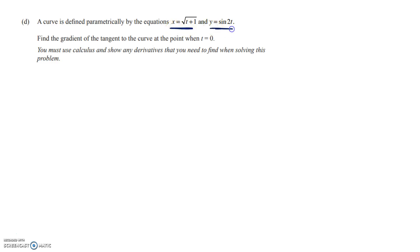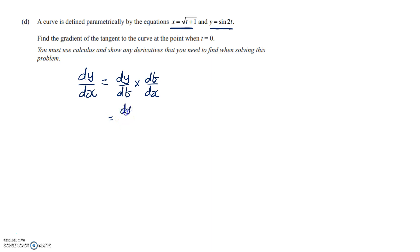This is a parametric differentiation problem and we're asked to find the gradient of the tangent to the curve at the point where t is equal to 0. So the way parametric differentiation works is like this — we've got the chain rule basically: dy by dx is equal to dy by dt times dt by dx, which is the same as dy by dt over dx by dt. So what we have to do first is differentiate each of those things with respect to t, then we substitute in t equals 0.